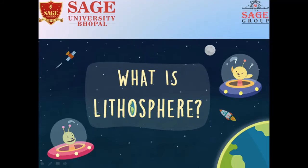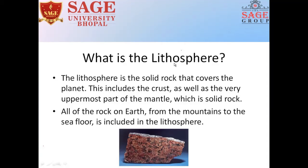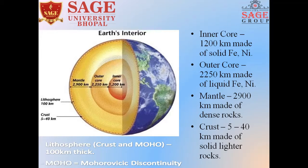What is lithosphere? The lithosphere is the solid layer that covers the planet. This includes the crust, as well as the very upper part of the mantle, which is also called solid rock. Even all of the rock on earth, from the mountain to the sea floor, is included in the lithosphere. This is the section of earth, which consists of inner core, outer core, mantle, and lithosphere.